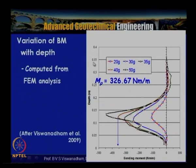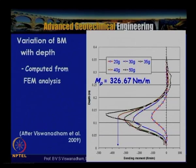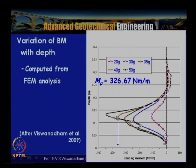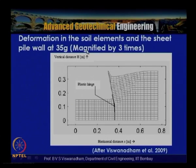The same issue was compared with finite element analysis using PLAXIS software, increasing gravity incrementally. The plastic moment capacity of the 3 mm thick aluminum wall (E = 72 GPa) was calculated as approximately 326.67 Newton-meter per meter. It can be clearly seen that at a certain gravity level the bending moment crossed this plastic moment capacity, leading to plastic hinge formation. The Ferrandon method also shows sharpening of the bending moment curve, confirming the result.